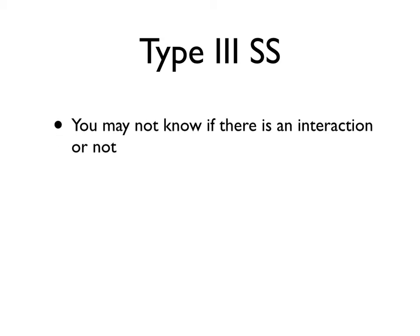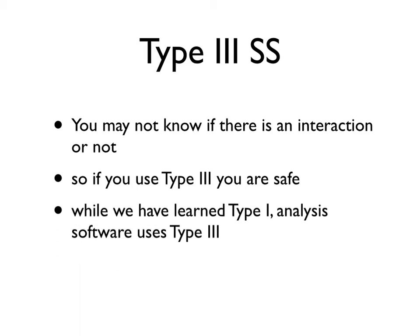So you probably don't know if there's an interaction or not. Type 3 sums of squares don't care. Which is great. So in fact, that's what we use. That's what our software uses. When we teach it to you, the type 1s are what's used. Because frankly, if you have equal ns, type 1 equals type 2 equals type 3. So they end up being conceptually the same anyway. All software now uses type 3 sums of squares.